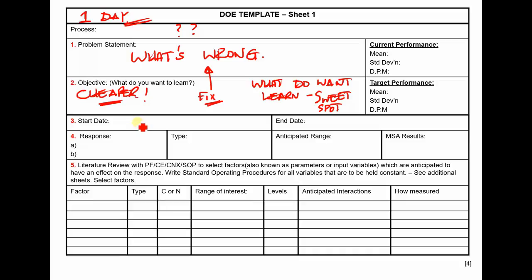Then: What's your start date and end date? This means how much time do you have to do this test. Time will always make you compromise. You need to know: have I got the machine for the weekend, or just a day shift? When you design the experiment, you need to make sure it fits in that time window.